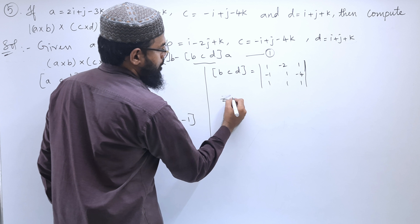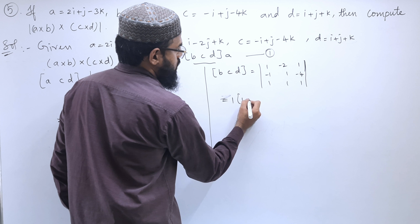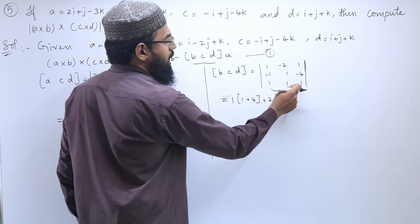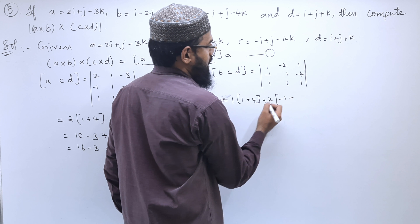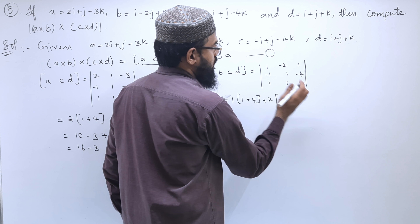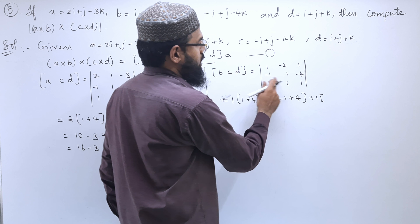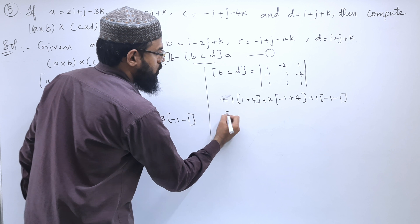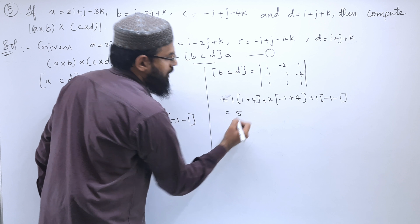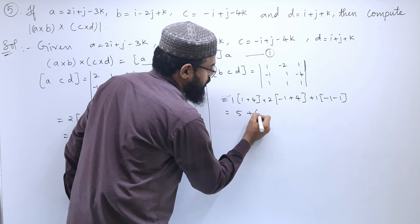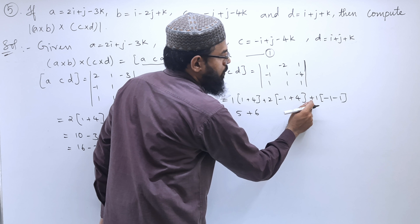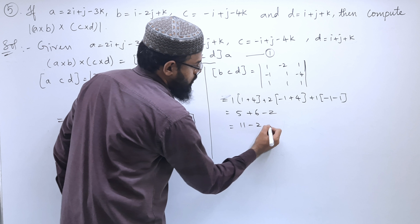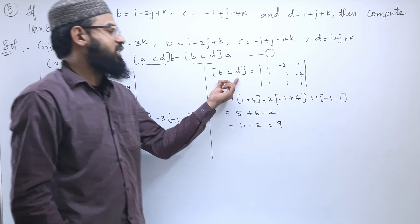Expanding [B, C, D]: 1 times (1×1 − (−4)×1) minus (−2) times ((−1)×1 − (−4)×1) plus 1 times ((−1)×1 − 1×1). This gives 1(1+4) + 2(−1+4) + 1(−1−1) = 5 + 6 − 2 = 9. So the box product [B, C, D] equals 9.